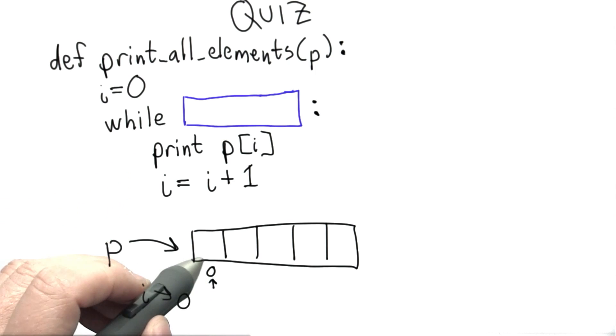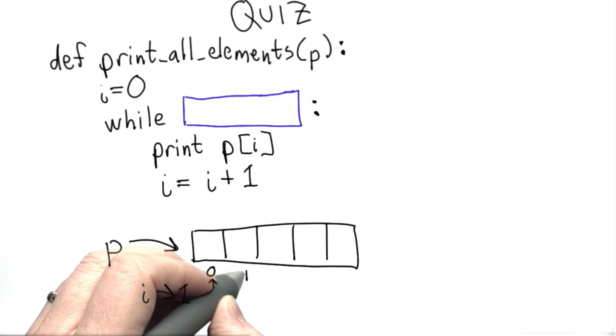In the loop body, we print out that element, and then we go on to the next element by increasing i by 1. i will now have the value 1. We go to the next element of p.